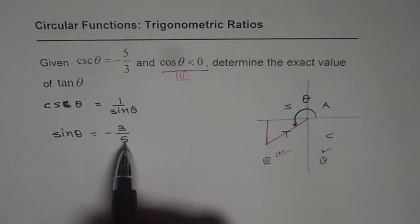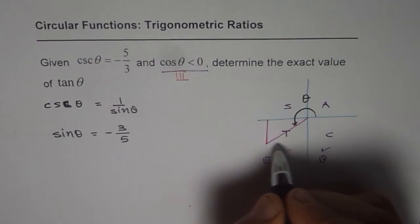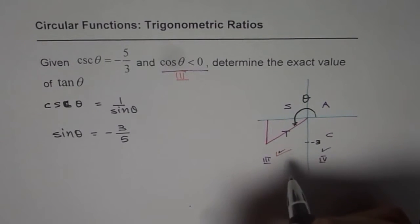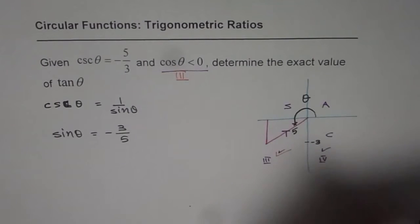Minus 3 over 5 really means that this side is downwards. That is why we are saying minus 3. So this point is minus 3 for us and 5 is the hypotenuse. That side is the hypotenuse.